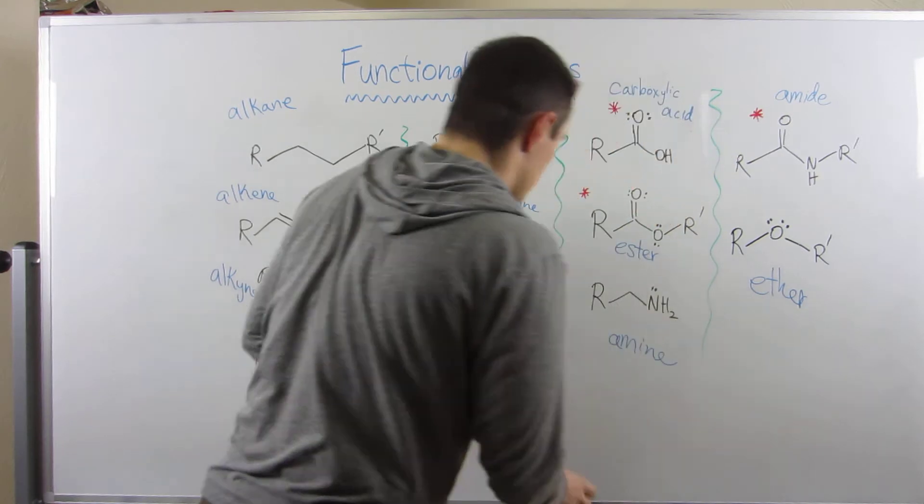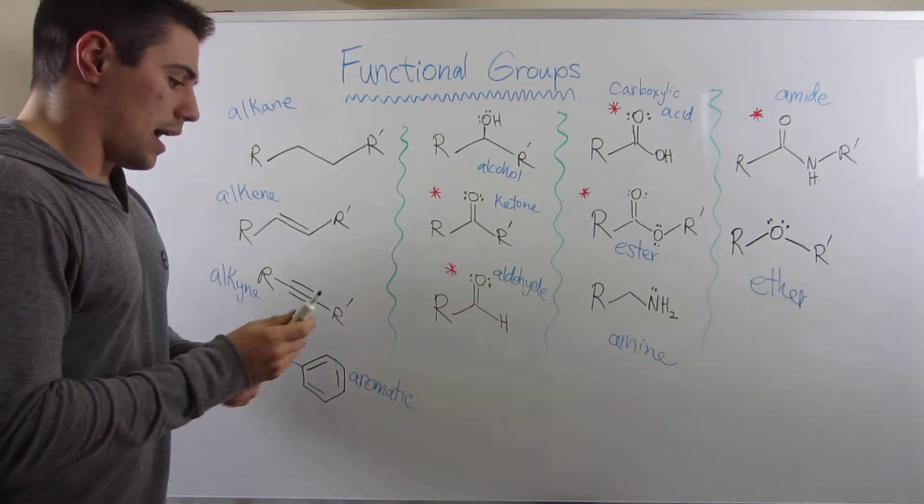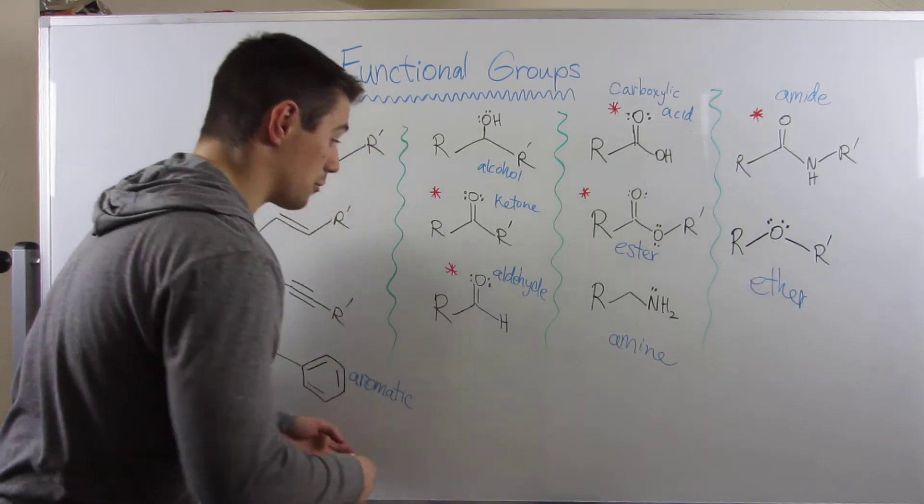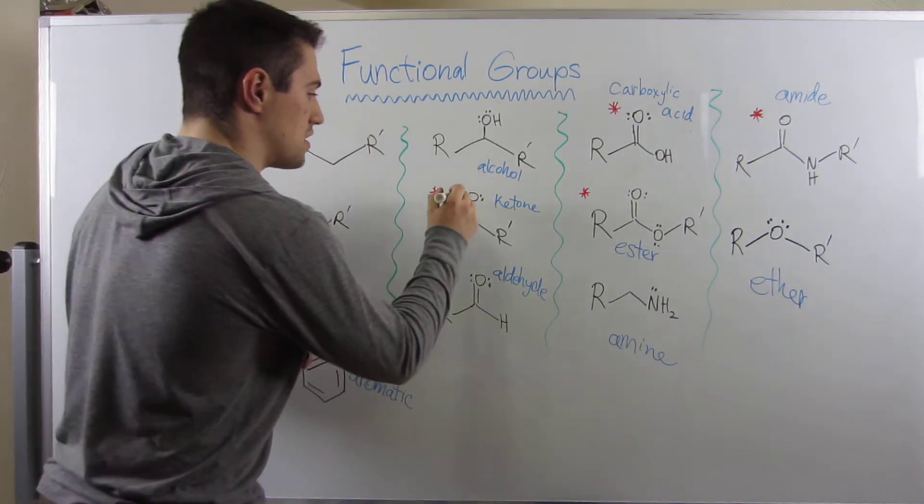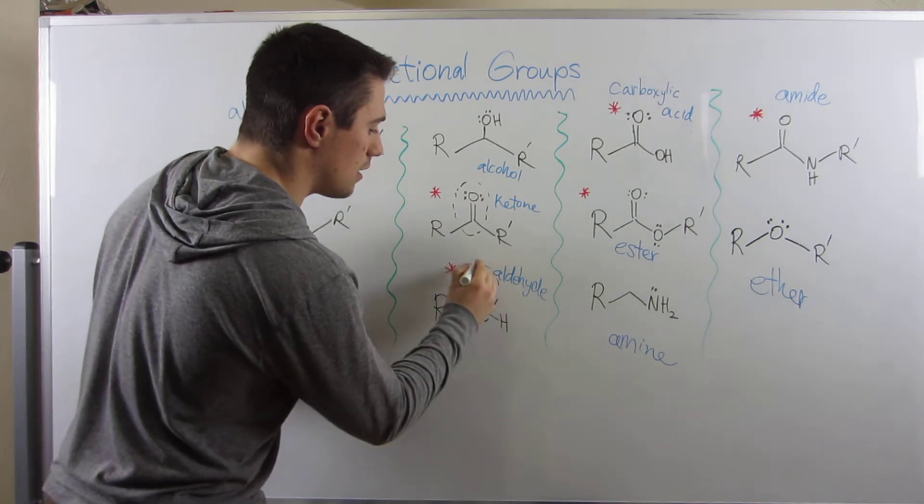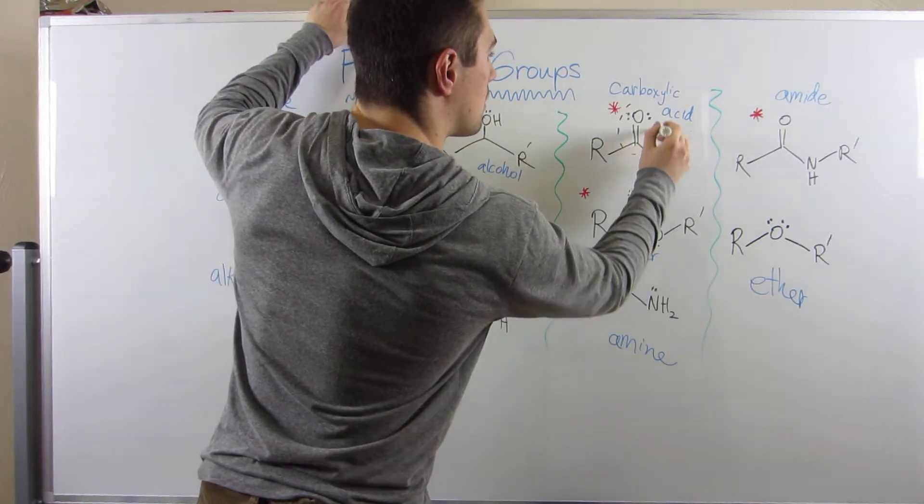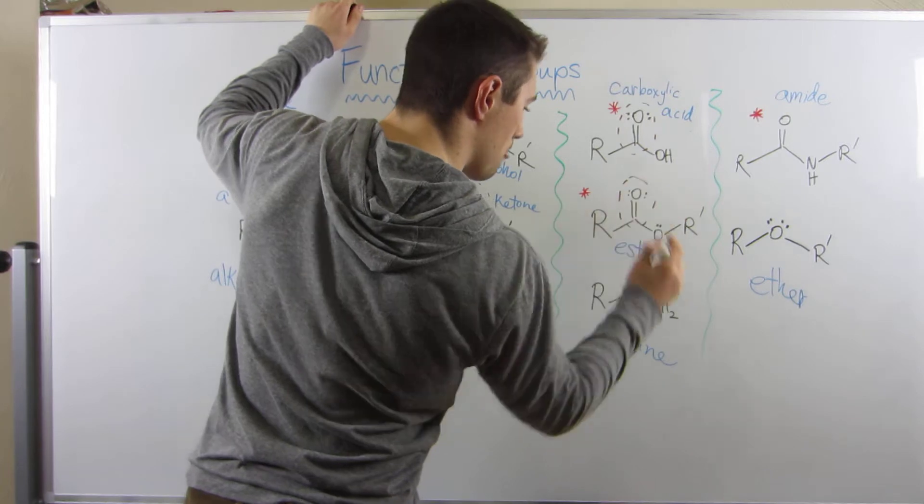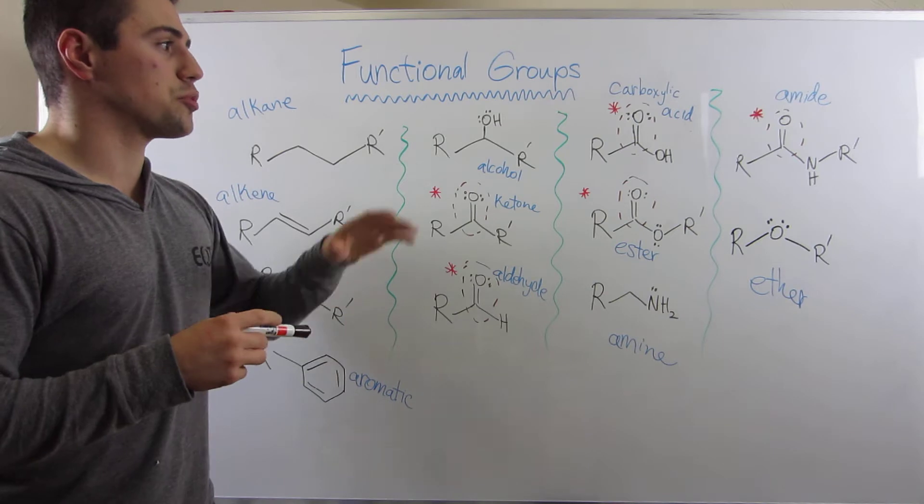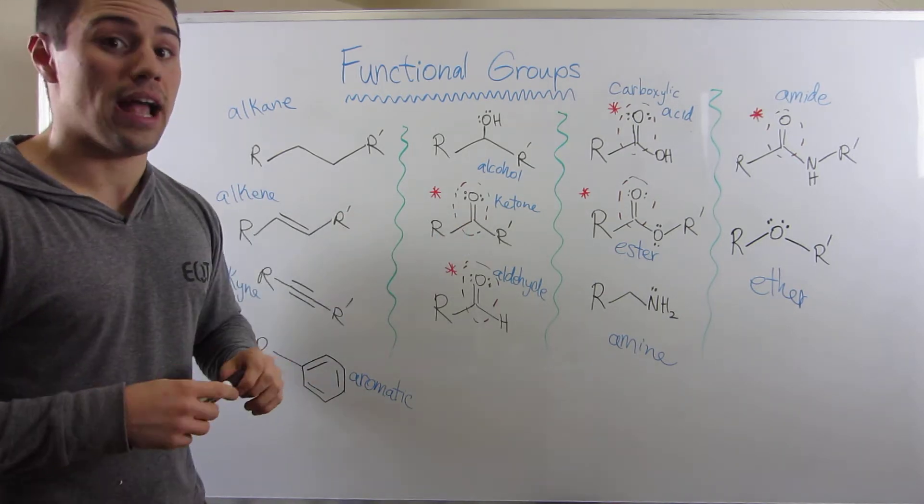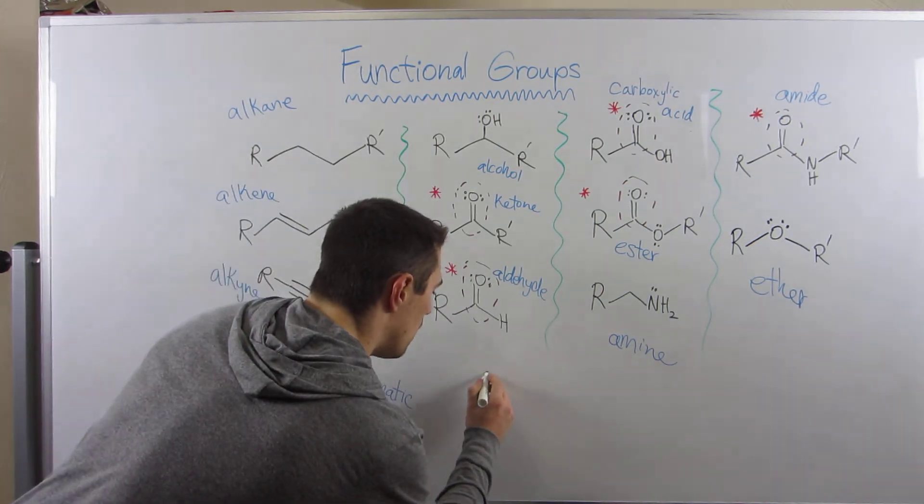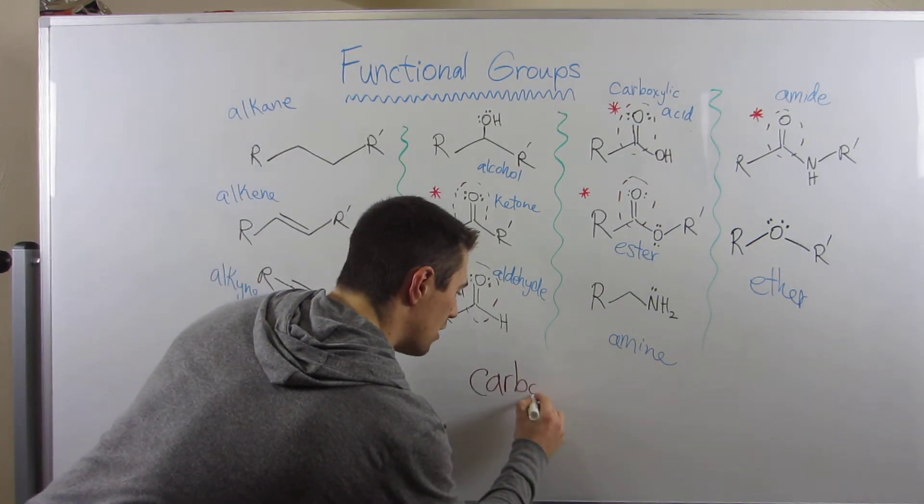Okay. So now let me kind of unravel this mystery of the red asterisk. Okay. So in every scenario where I have a red asterisk, you can see that there's this C double bonded O, right? It's right there. It's right here. It's right there. And it's right there. There's a special word to just refer to this C double bonded O. Anytime you have that, you can refer to that as a carbonyl.